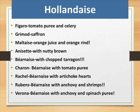Hollandaise derivatives: Figaro — tomato purée and celery; Grimaud — saffron; Maltaise — orange juice and orange rind; Noisette — with nutty brown butter; Béarnaise — with chopped tarragon; Choron — Béarnaise with tomato purée; Rachel — Béarnaise with artichoke hearts; Rubens — Béarnaise with anchovy and shrimps; Véronaise — Béarnaise with anchovy and spinach purée.